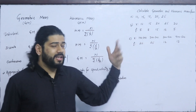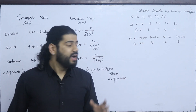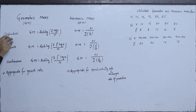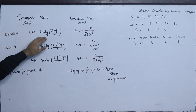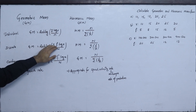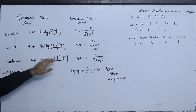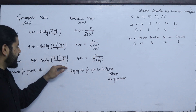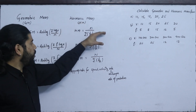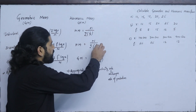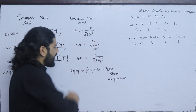How do geometric mean and harmonic mean work? For geometric mean, the formula involves summation of log x upon N. For discrete series, frequency is multiplied as f into log x. For continuous series, we use the mid value as small x, with summation f·log x upon N. The harmonic mean is N upon summation of 1 upon x, and for discrete series, it uses frequency with 1/x.